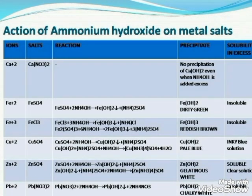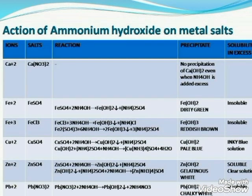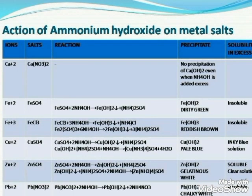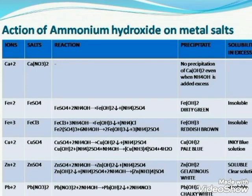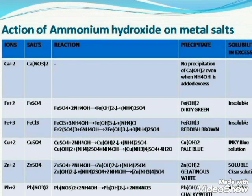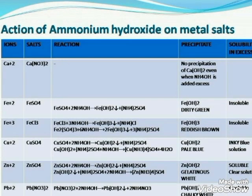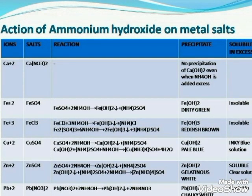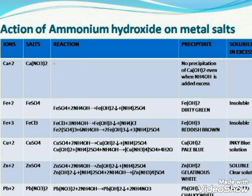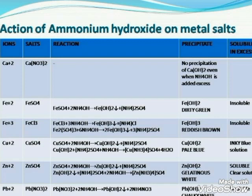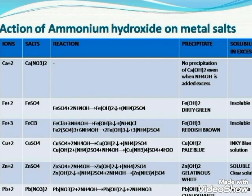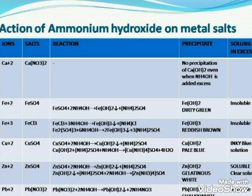This is the action of ammonium hydroxide on various metal salts. You can see that the color of the precipitate is usually the same, but the solubility is quite different. The important salts to note here are copper and zinc. In limited amount they are forming a pale blue precipitate, but in excess copper forms an inky blue solution, and for zinc it is a gelatinous white precipitate in limited amount and a clear solution in excess.